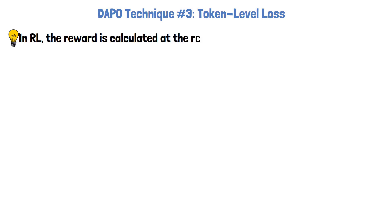Let's move on to the third technique called token level loss. In reinforcement learning, the reward is calculated at the response level. We don't have immediate feedback for each token, such as in pre-training for example, where we train the model to predict the next token in a sequence. In other words, in reinforcement learning, there's no ground truth label for each token, only a reward for the entire response.